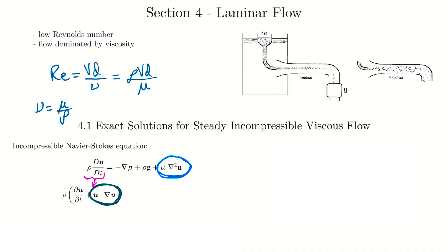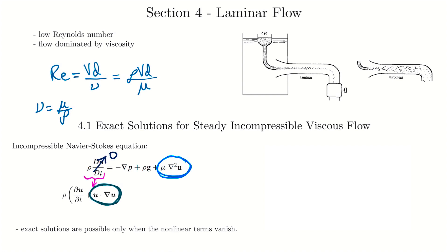There are actually some movies where they portray famous mathematicians trying to solve the Navier-Stokes equation because it's just so challenging. Exact solutions are possible only when the nonlinear terms vanish. Because we have laminar flow where the viscous terms dominate — as shown by the scaling analysis — we can get rid of that nonlinear advection term from our Navier-Stokes equation at low values of the Reynolds number.